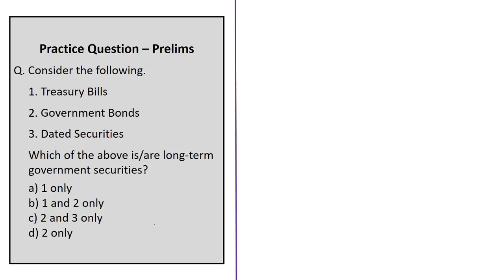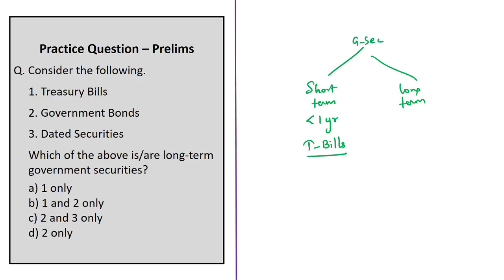The next question asks: which of the following are long-term government securities — treasury bills, government bonds, or dated securities? Government securities are classified as short-term or long-term based on the maturity period. If the maturity period is less than one year, they are called short-term government securities, also called treasury bills. Long-term government securities are also called government bonds and dated securities, with a maturity period of one year or more. So the correct answer is Option C — two and three only.